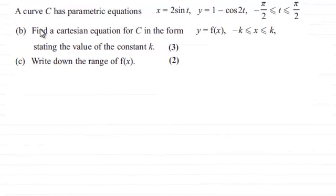Hi there. Now for this part of the question we're told that a curve C has parametric equations x equals 2 sine t and y equals 1 minus cos 2t, where t is greater than or equal to minus π/2 but less than or equal to π/2.